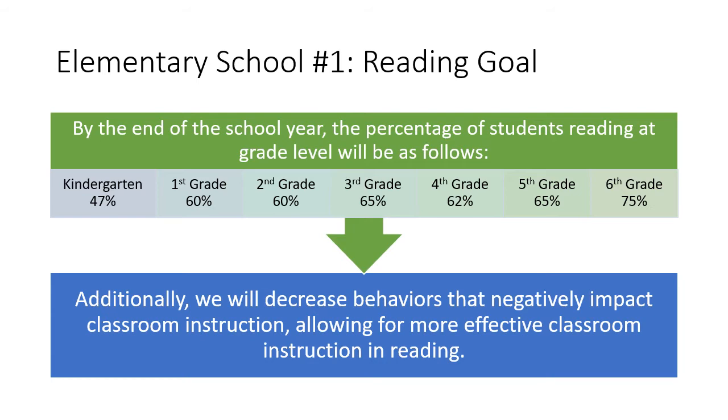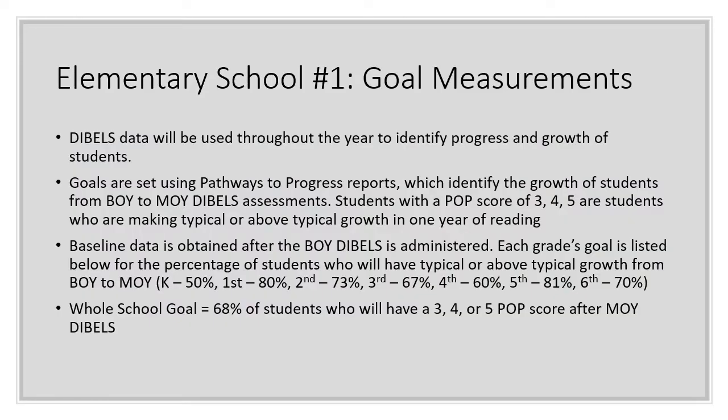Looking at this goal, some of the things they set for their measures include reading proficiency using an assessment called DIBELS. This is a reading assessment that's very popular in the state of Utah — just about every elementary school is using it. The DIBELS data is administered at least three times a year: the beginning of the year, the middle of the year, and the end of the year. There's also what they call progress monitoring done in between those assessments — some schools do them once a week. Each of those measures will give you what they call pathways to success or pathways to progress, which shows where students are and what kind of progress they need to make to be proficient over a reasonable amount of time.